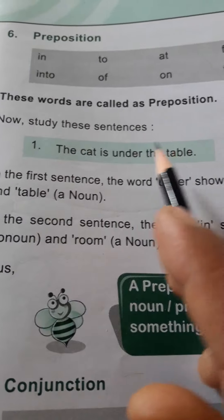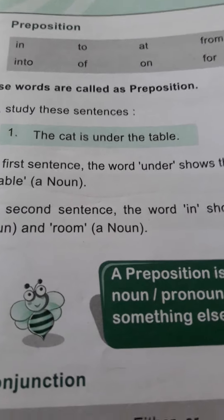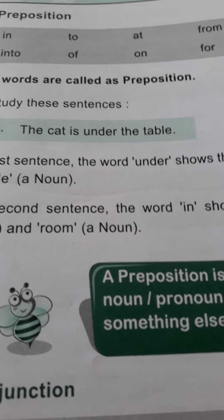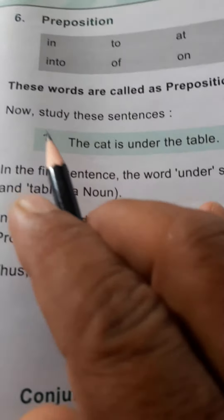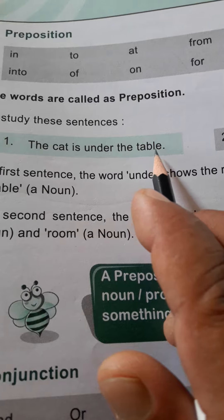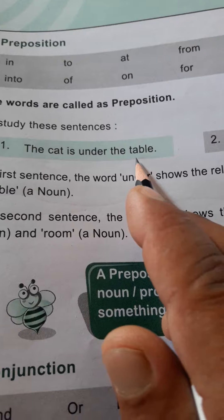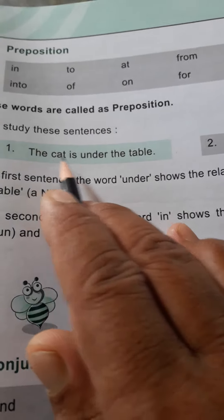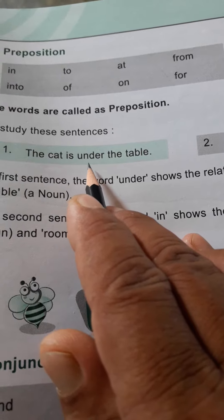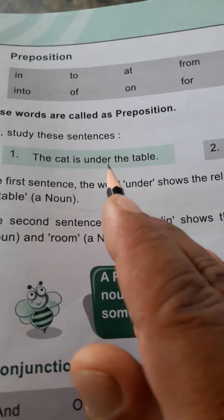Now study these sentences. We will clarify the definition of preposition merely with the help of two examples. Just watch it. The cat is under the table. Here the first noun is the cat and second noun is the table, and the relationship between both the nouns becomes clear with the help of the word under. In Hindi it means billi table ke niche hai.